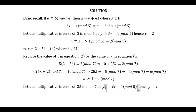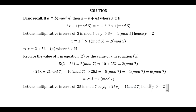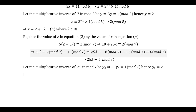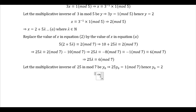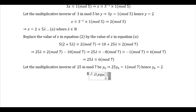y₀ satisfies 25 times y₀ ≡ 1 (mod 7). When y₀ equals 1, we get 25, which is not congruent to 1 mod 7. When y₀ equals 2, we get 50, and 50 is congruent to 1 mod 7 because 50 divided by 7 has remainder 1. So y₀ equals 2. Multiplying both sides by the inverse, lambda is congruent to 2 times 6 mod 7, which equals 12 mod 7.